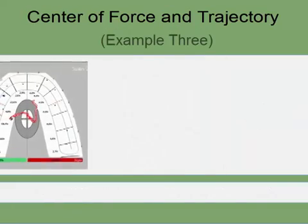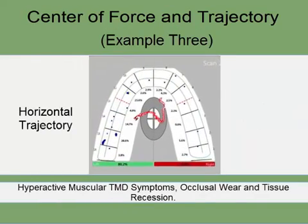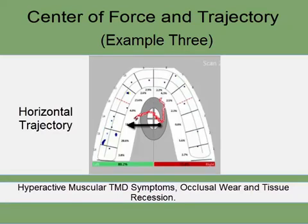The third example shows group function because the anterior guidance fails to disclude the posterior teeth. The trajectory initially moves anteriorly left and then turns downwards towards the posterior left teeth. This may also suggest hyperactive muscular TMD symptoms, occlusal wear, and tissue recession.